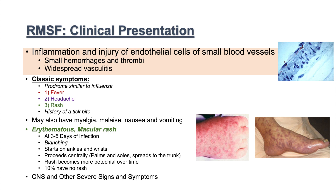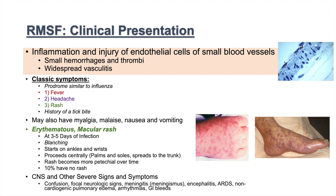There are also CNS and other severe signs and symptoms, and this is what can cause Rocky Mountain Spotted Fever to be lethal. These can include confusion, focal neurologic signs, meningitis — if an individual has meningismus or a stiff neck, think meningitis — encephalitis, ARDS (adult respiratory distress syndrome), non-cardiogenic pulmonary edema, arrhythmias, and GI bleeds. This can be very severe if left untreated.